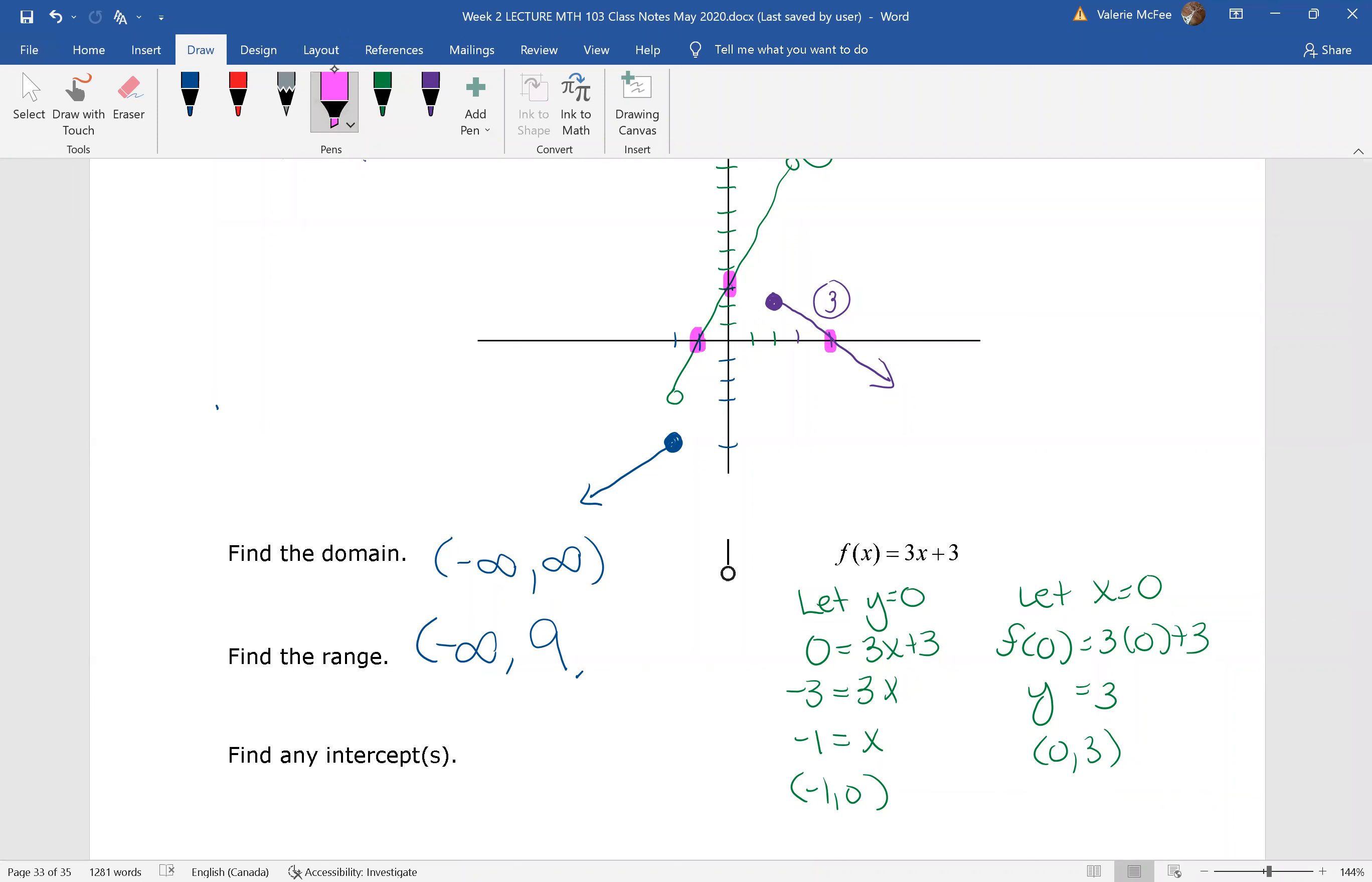When we look at the equation from the second piece, we can see our two intercepts: x equals negative one and y equals three. Let's find the last intercept using our third equation.